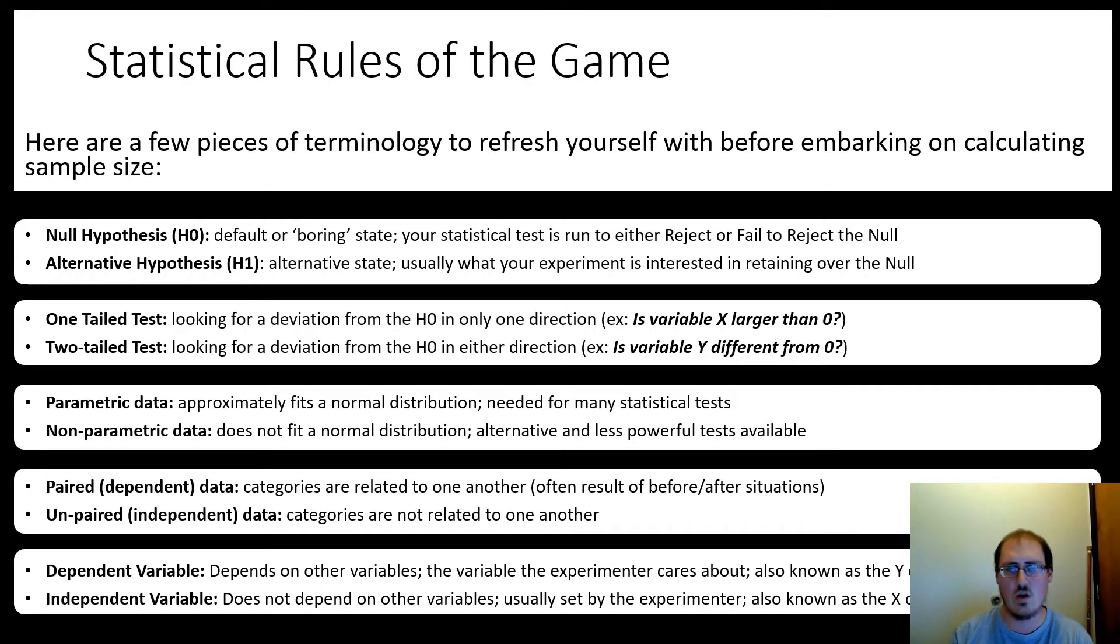So the first set is the null hypothesis and the alternative hypothesis. So the null, sometimes called H0, it's the default or boring state of your experiment. Specifically, you're running your statistical test to either reject this or fail to reject this.